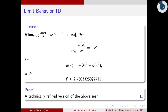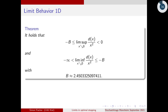We prove this following the heuristic argument with additional technicalities. We can further refine the result: even if the limit of d(x)/x² does not exist, we can show the limit superior must be strictly negative and at least –B, and the limit inferior must be strictly finite and at most –B.